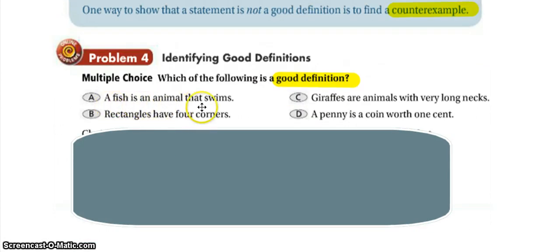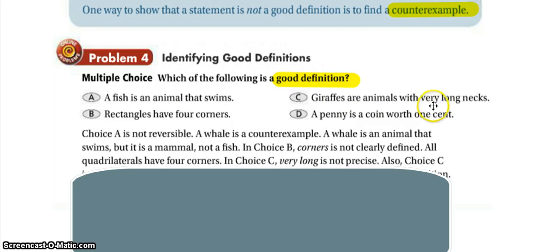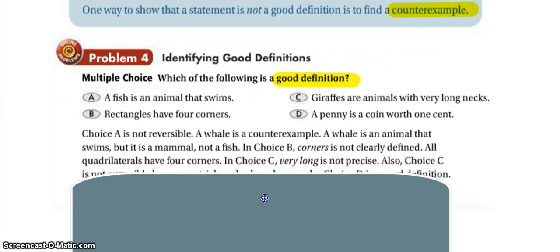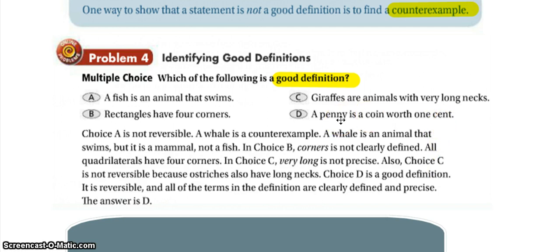Option A: 'a fish is an animal that swims' — not detailed enough, and the converse 'an animal that swims is a fish' is false since many animals swim but aren't fish. Option B: 'rectangles have four corners' — 'corners' is not specific, and all quadrilaterals have four corners. Option C: 'giraffes are animals with very long necks' — 'very long' is vague and undefined. Option D: 'a penny is a coin worth one cent' — reversing it, 'a coin worth one cent is a penny' is true. It is reversible, it makes sense, and D is the good definition.